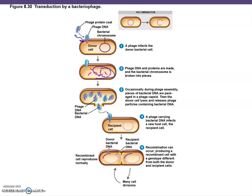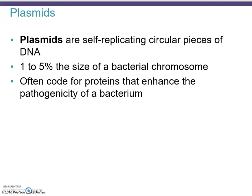Now let's look at plasmids. Plasmids are small, circular pieces of DNA on the order of a couple thousand nucleotides and are self-replicating. They're about one to five percent of the size of a bacterial chromosome and often code for proteins that enhance the pathogenicity of a bacterium or help it survive antibiotics. Think of plasmids as extra-chromosomal information — like a flash drive you're adding to a computer, a secondary source of information.